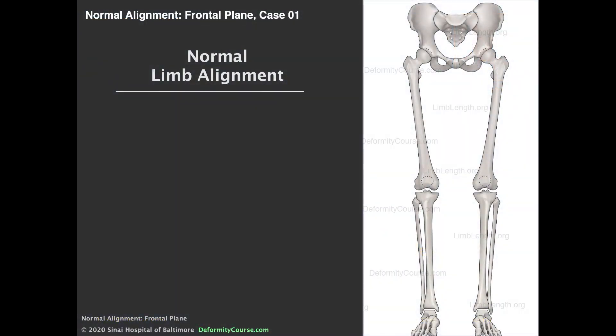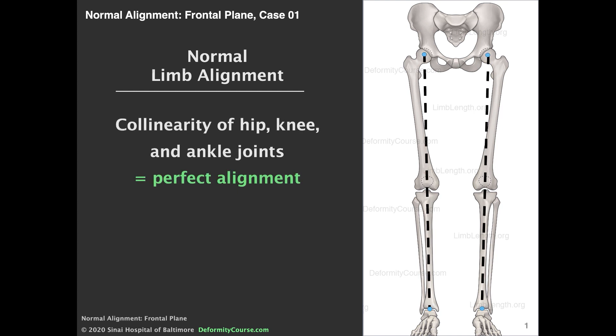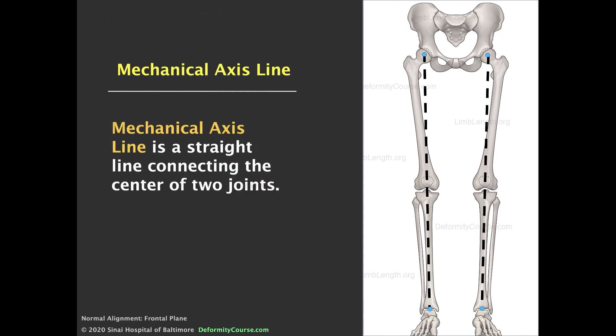Normal limb alignment is defined as collinearity of the hip, knee, and ankles. The mechanical axis should fall through the center third of the knee.